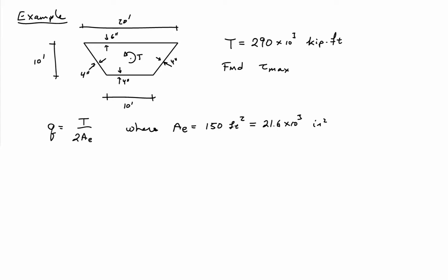AE is the enclosed area, so the enclosed area of the tube is 150 square feet. Let me convert this into inches since my walls are in inches. That gives me 21.6 times 10³ inches squared, multiplying everything through by 12 squared.